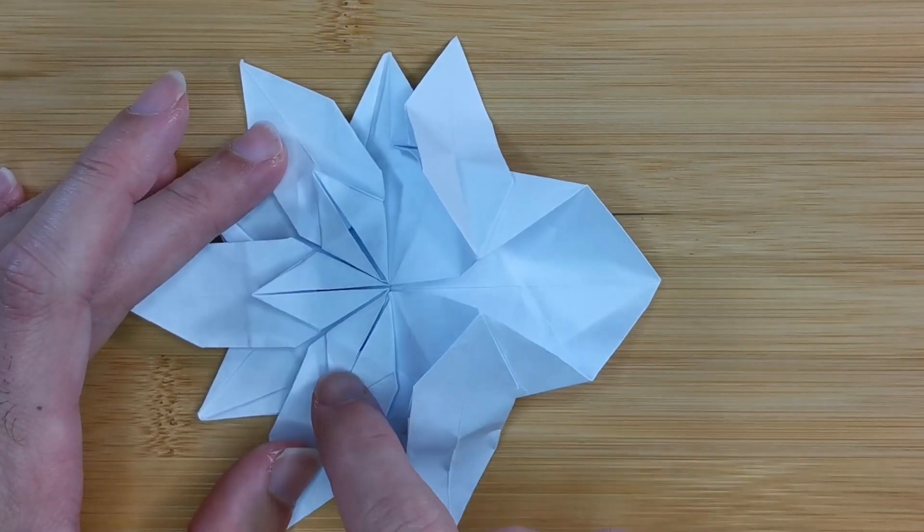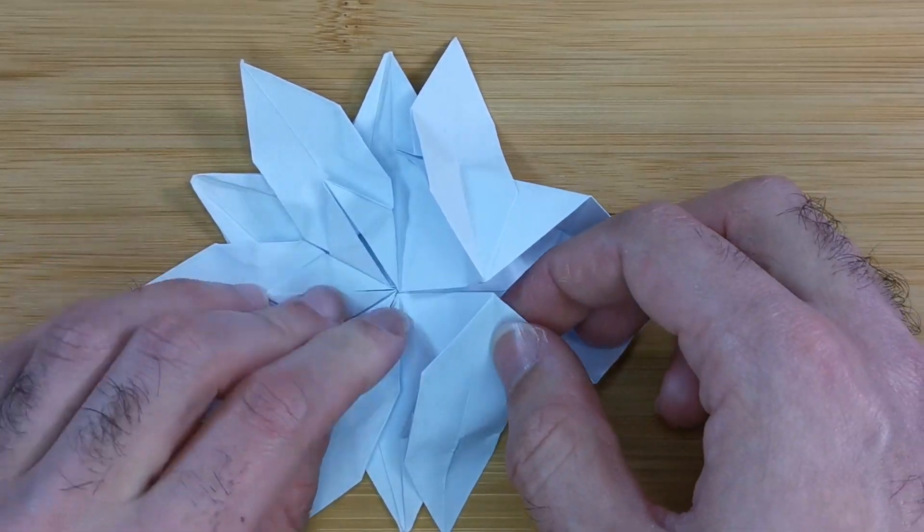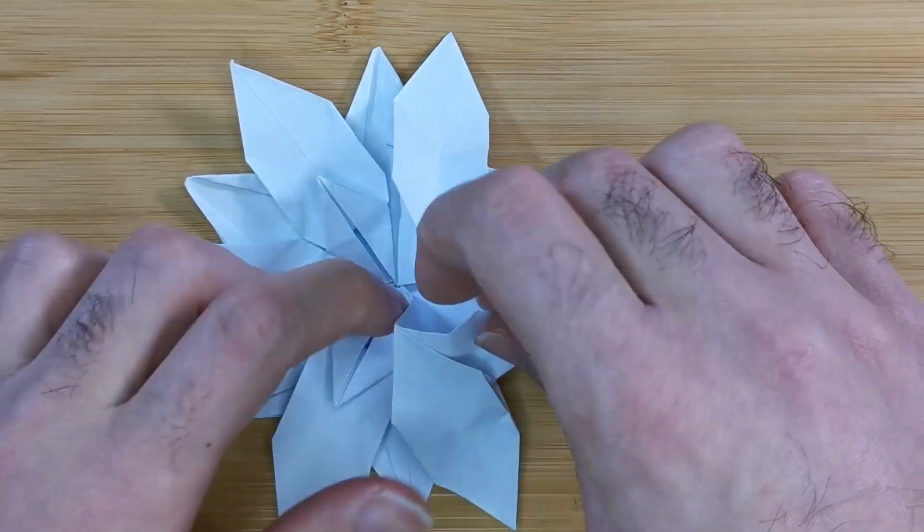Once I have three diamonds done, I like to fold along the two remaining creases to have all the branches pointing towards the center.